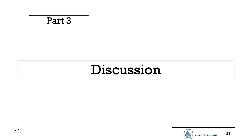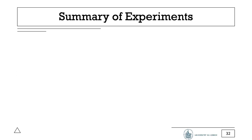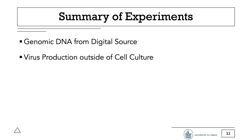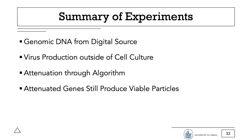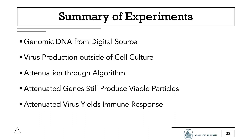Now I will move over to the discussion part, where I collect the results and implications of the papers. I'll summarize the results of the experiments on one slide. We have seen that a genome in the form of digital data can be synthesized. This genome can then be replicated and translated without the need for a living organism or cell culture. A known genome can be modified in computer-assisted design to fine-tune the translation efficiency based on the host cell codon bias. Virus genes modified this way can still be translated and yield infectious virus particles with wild-type proteins. Lastly, this attenuated virus can spread in a mouse model of infection and provides effective immune memory against wild type polio.